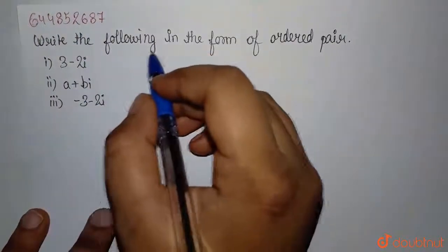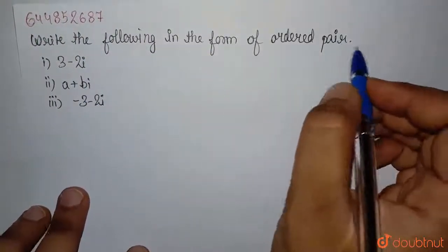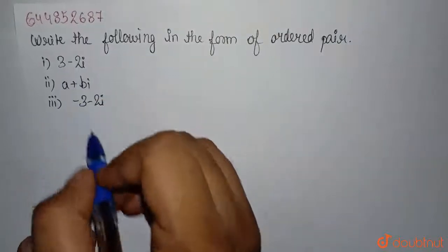In this question, it is saying write the following in the form of ordered pairs. And these are complex numbers.